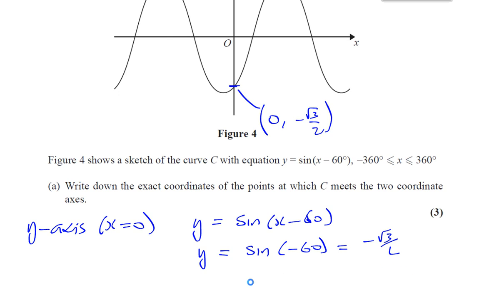So we can say that this is going to be 0 and negative root 3 over 2. That's the coordinates where it hits the y-axis. So you can say y-axis coordinates, 0 and negative root 3 over 2. You're going to leave it in its exact third form because it says here exact coordinates.